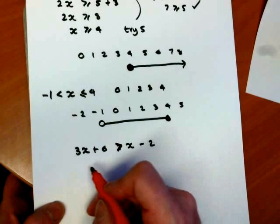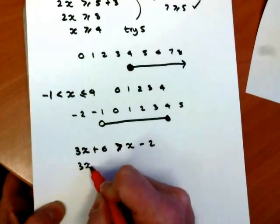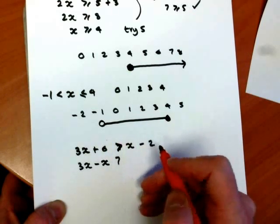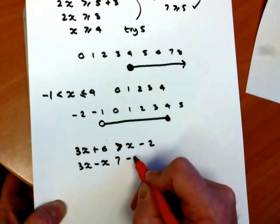I want to get my x's on this side. So just like equations, we can move the x over, change its sign. And then we move the 6 to the other side, and that will become minus 6.